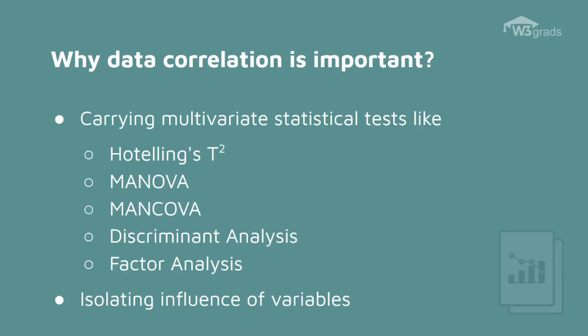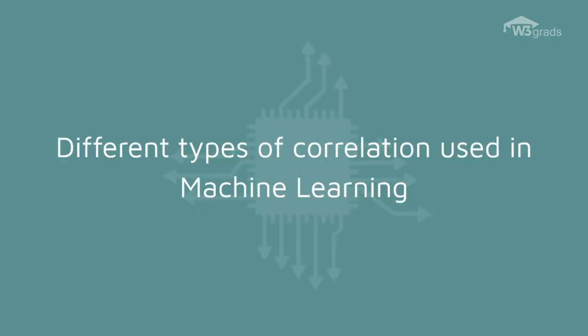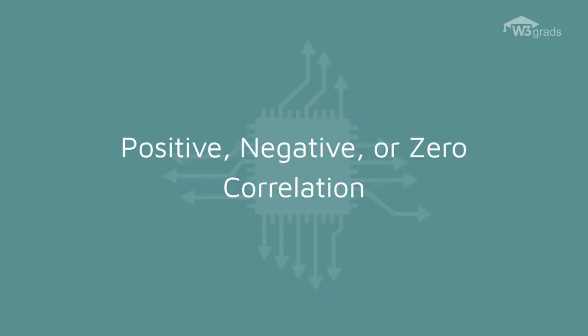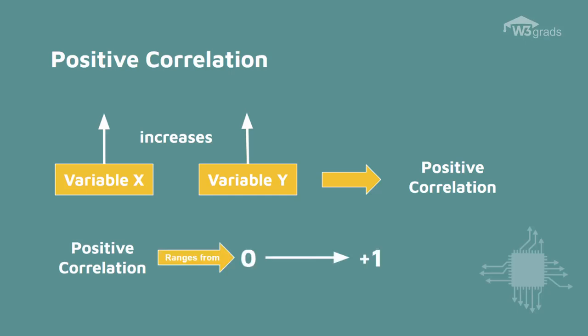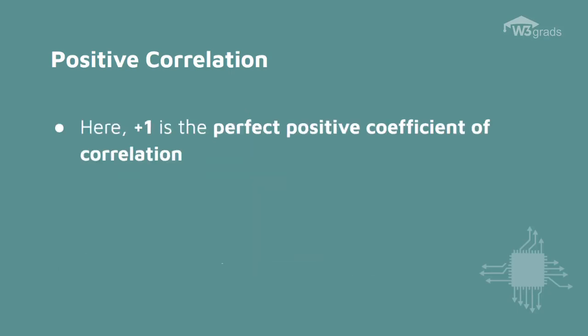Now that we know about correlation and its importance, let us proceed further to learn about the different types of data correlations used in machine learning. The first type of correlation is the positive, negative, or zero correlation. When the increase in one variable X is followed by a corresponding increase in the other variable Y, then the correlation is said to be positive correlation.